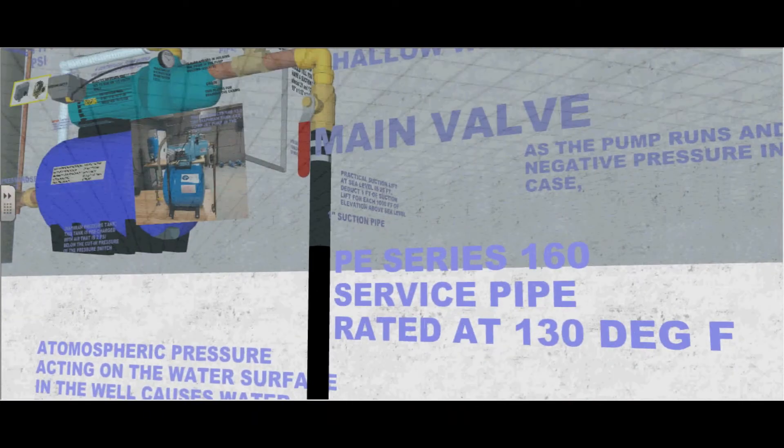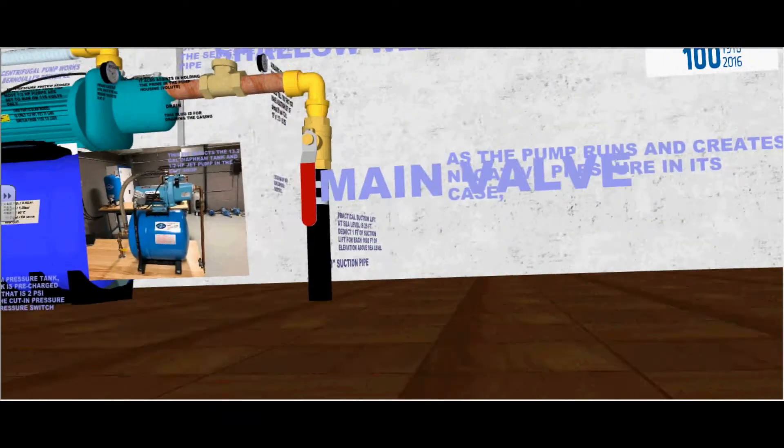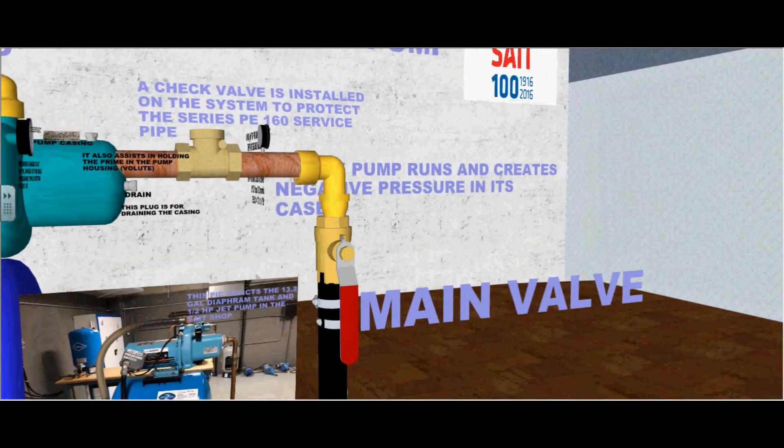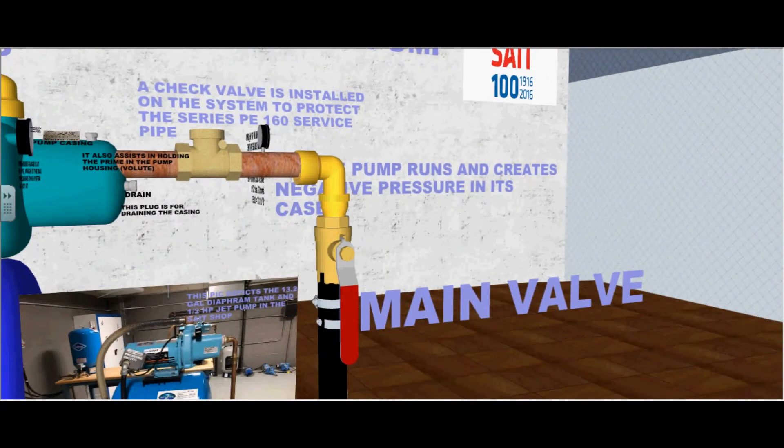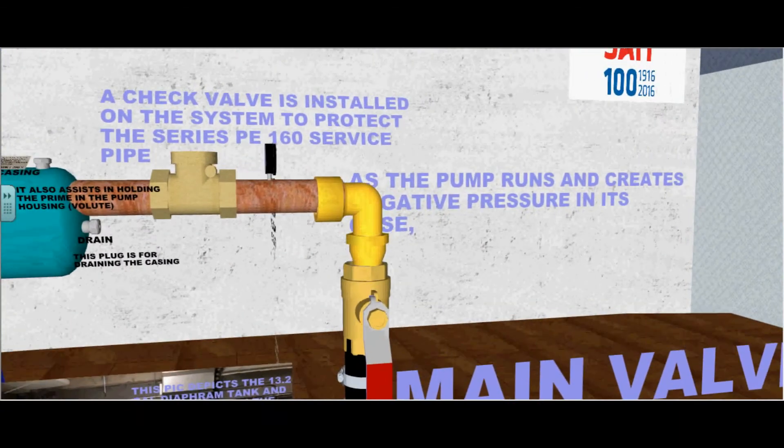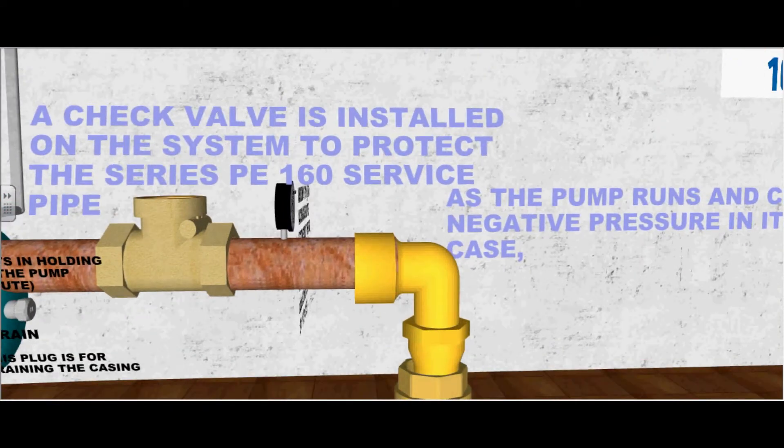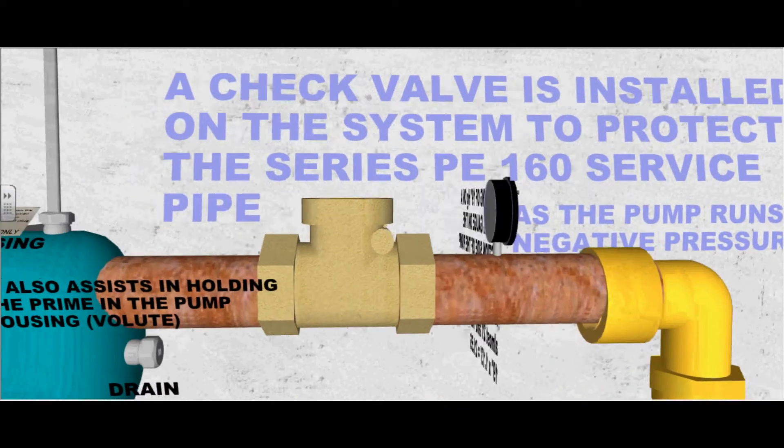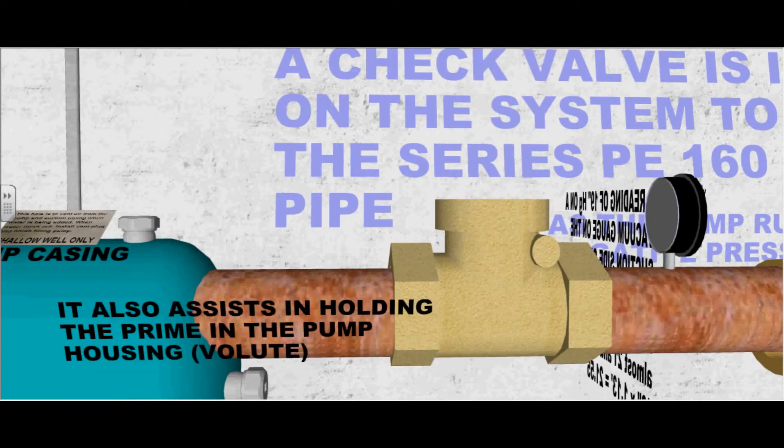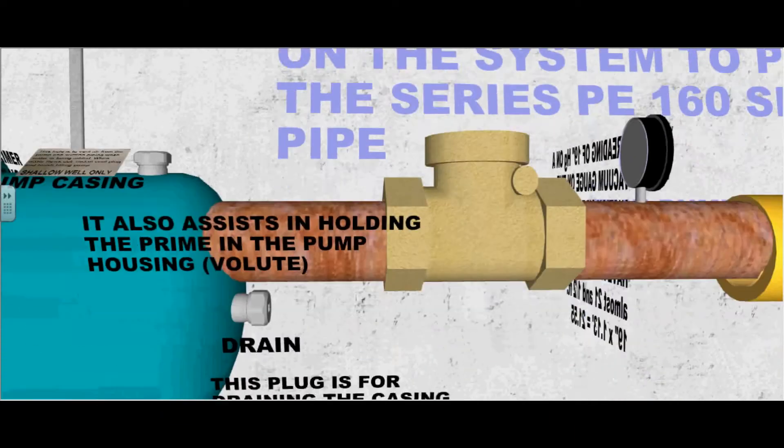Here the polyethylene service pipe is double clamped to the main valve. A check valve is installed on the system to protect the series service pipe from weakening, especially the clamp. It also assists in holding the prime in the pump housing or the volute.